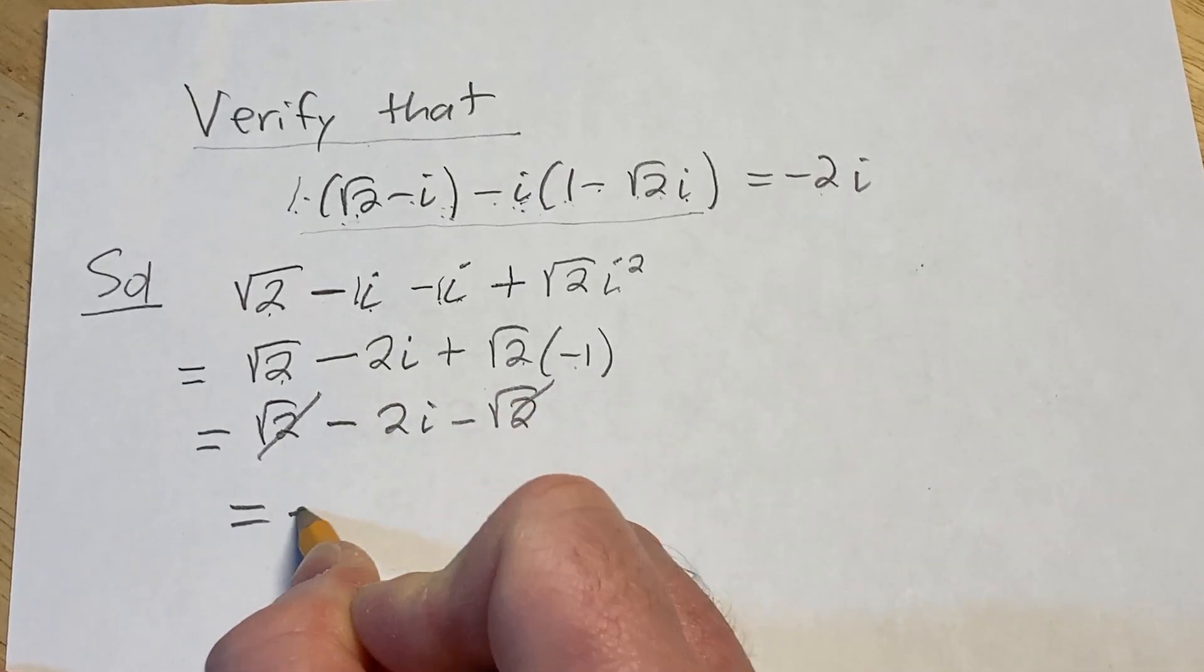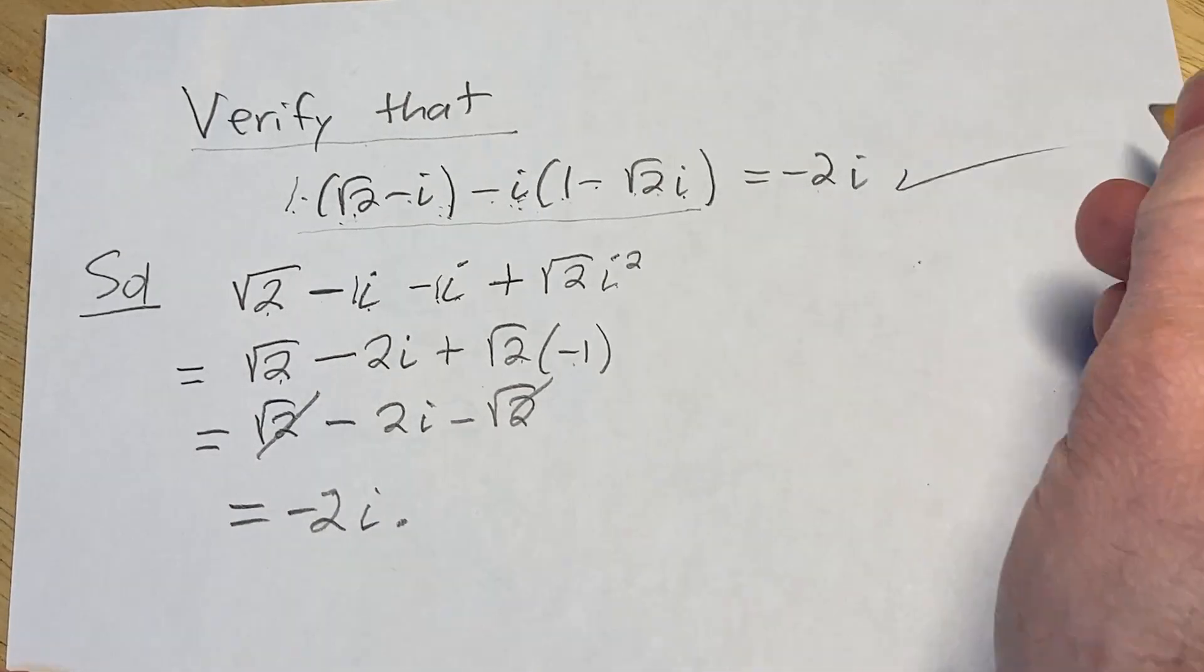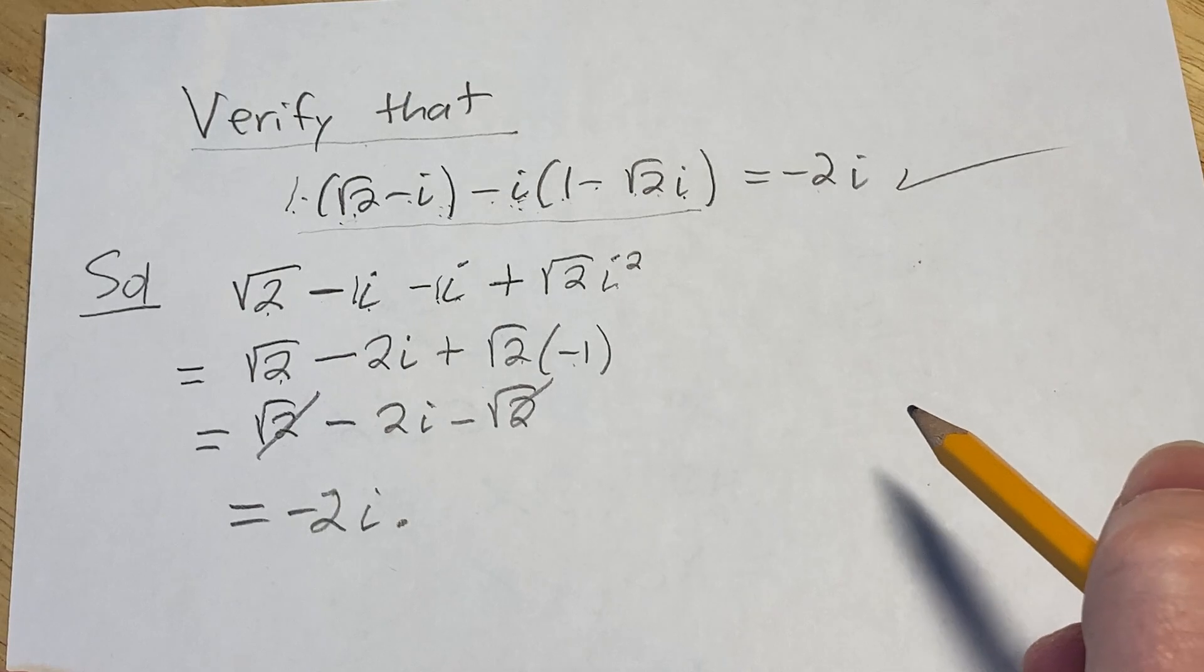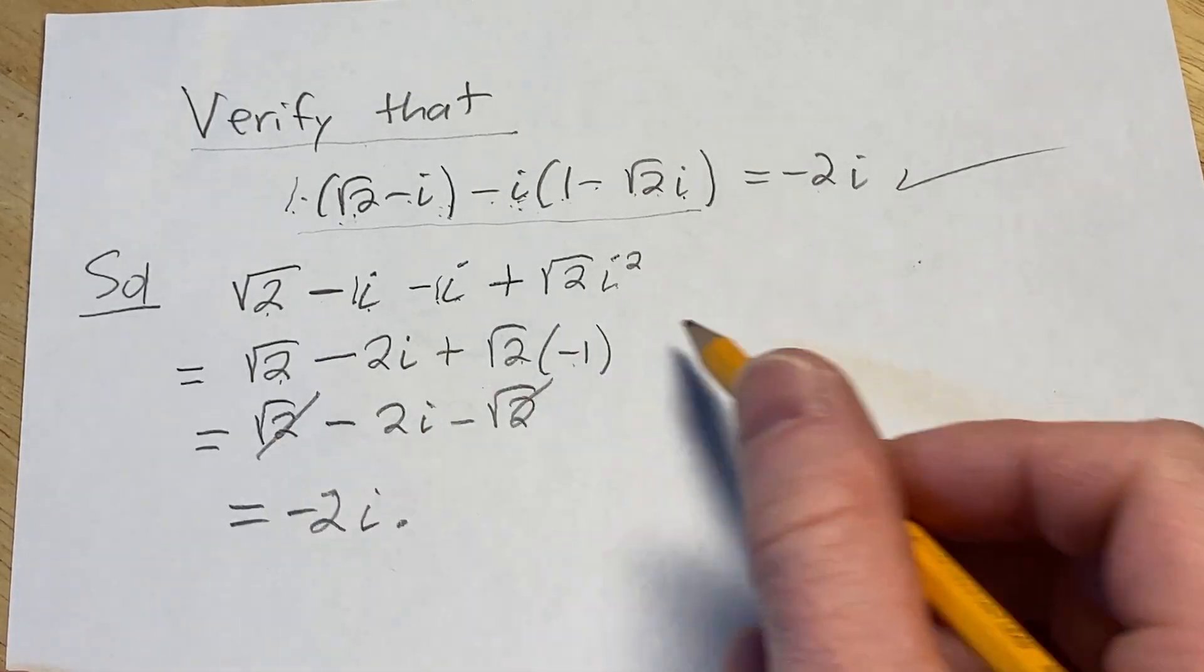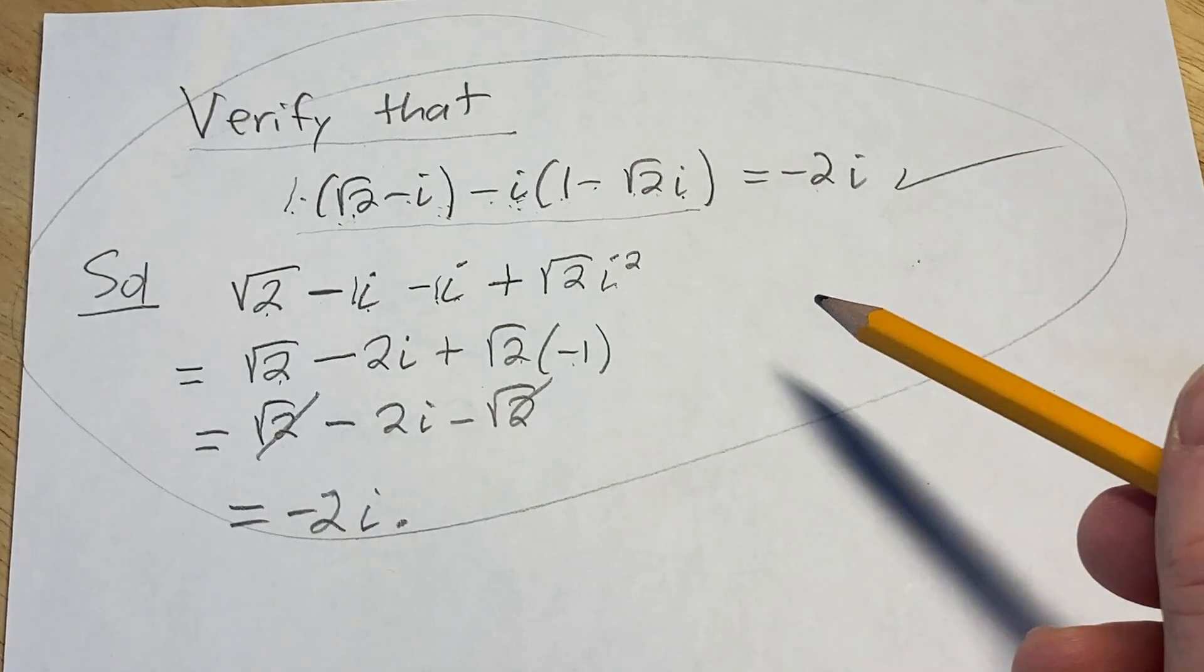These cancel and we end up with minus 2i and that completes our little verification. So we verified the equation. Simple problem but I thought I would just work through it. I hope it's been helpful and hopefully you've learned some mathematics. Good luck.